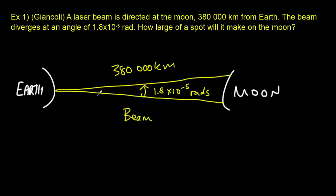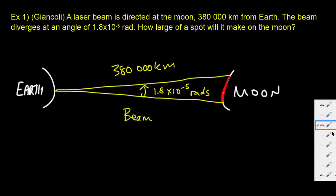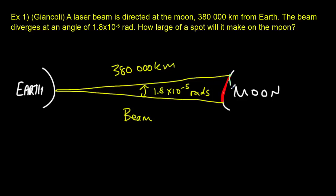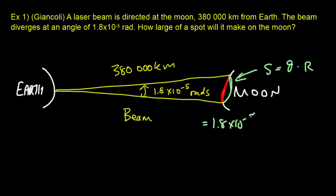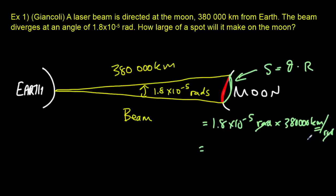I've drawn the basic quantities. Here's our beam — you can see that it's spreading out. What we're asked for is this distance here, but since this is a very small angle, that's essentially the same as the arc length. The arc length is given by the angle in radians times the radius. The angle is 1.8 × 10⁻⁵ radians, and the radius is 380,000 kilometers. The units of radians and radius cancel out, giving an answer in kilometers — 6.5 kilometers. So our beam covers 6.5 kilometers on the surface of the moon.